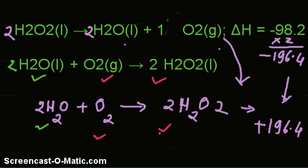So as such, all the terms tally, all the molecule numbers tally. Therefore, after doubling and reversing, we are getting this figure, which is the delta H — the required delta H.